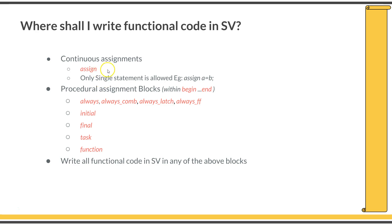It could be like assign a equals b, or assign c equals d, something like that. But if you want to write multiple statements in a block, they need to be in a procedural block. These are the procedural blocks available in SystemVerilog to write your functional code: always_comb, always_latch, and always_ff.